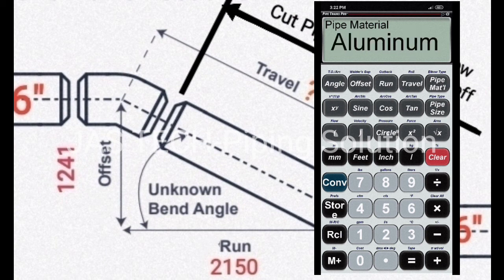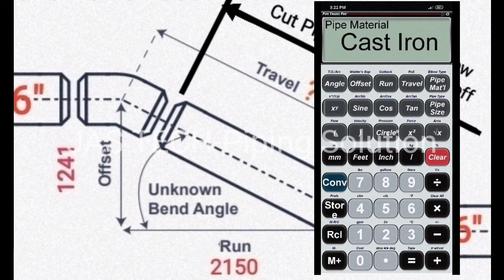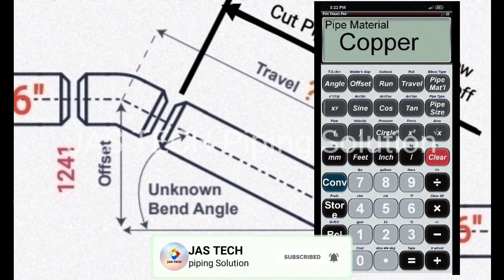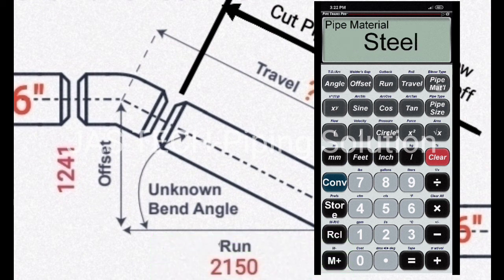Steel, Brass, Aluminum, Cast Iron, PVC, Copper. Just select Pipe Material Steel.